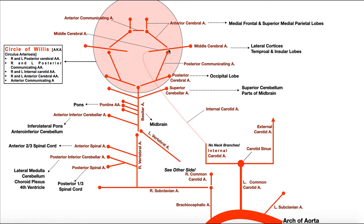At that junction, the internal carotid artery branches off to become the middle cerebral artery. The middle cerebral artery supplies the lateral cortices and the temporal and insular lobes. It is the most common artery involved in a stroke within the circle of Willis, and a stroke there typically manifests as issues in the face and upper extremities.